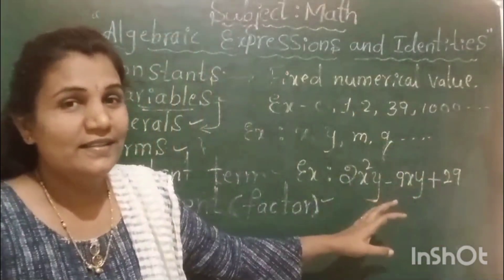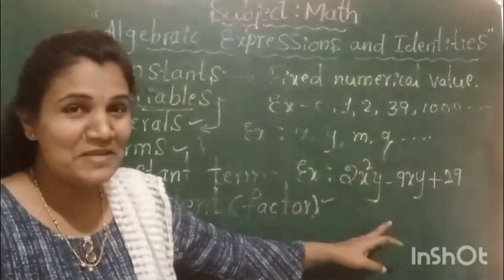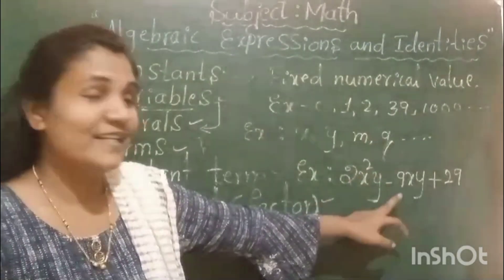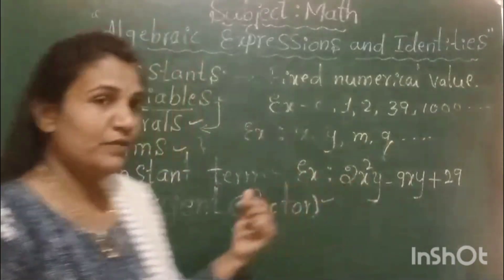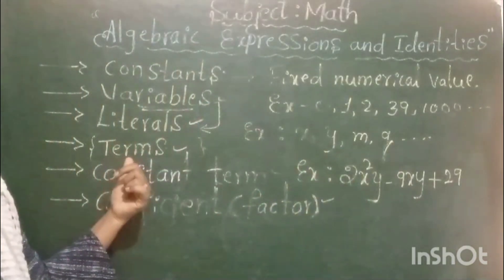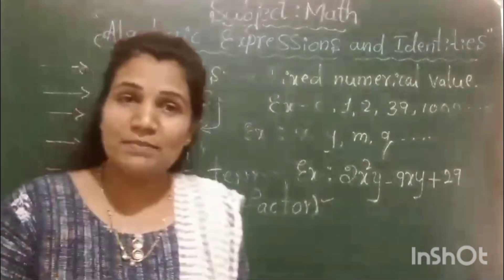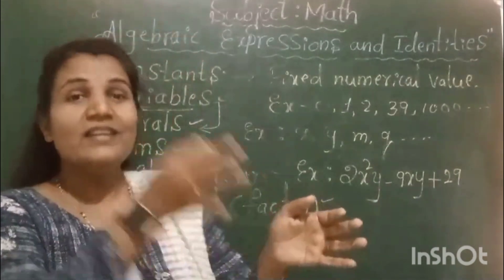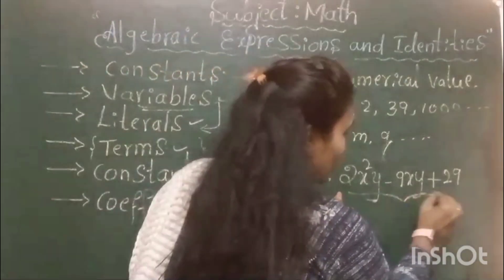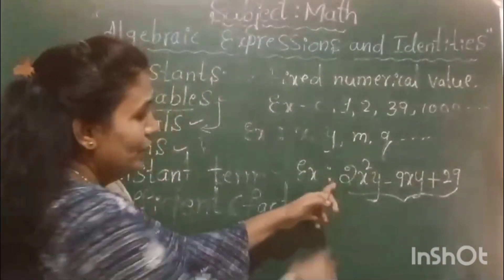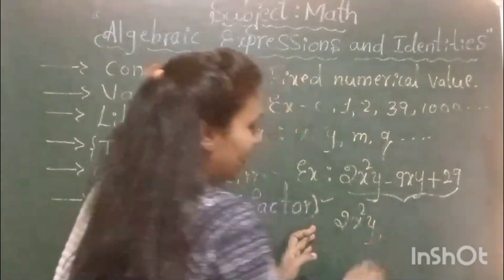This algebraic expression — 2X²Y − 9XY + 29 — is a trinomial. Coming to the term of an algebraic expression: a term is nothing but a part of an algebraic expression. Here in this expression, 2X²Y is there, −9XY is there, and +29 is also there.